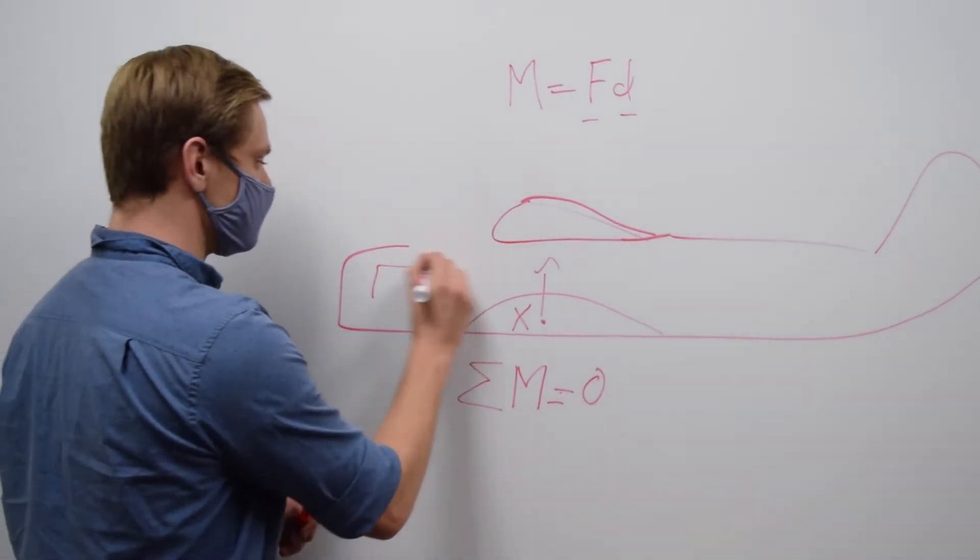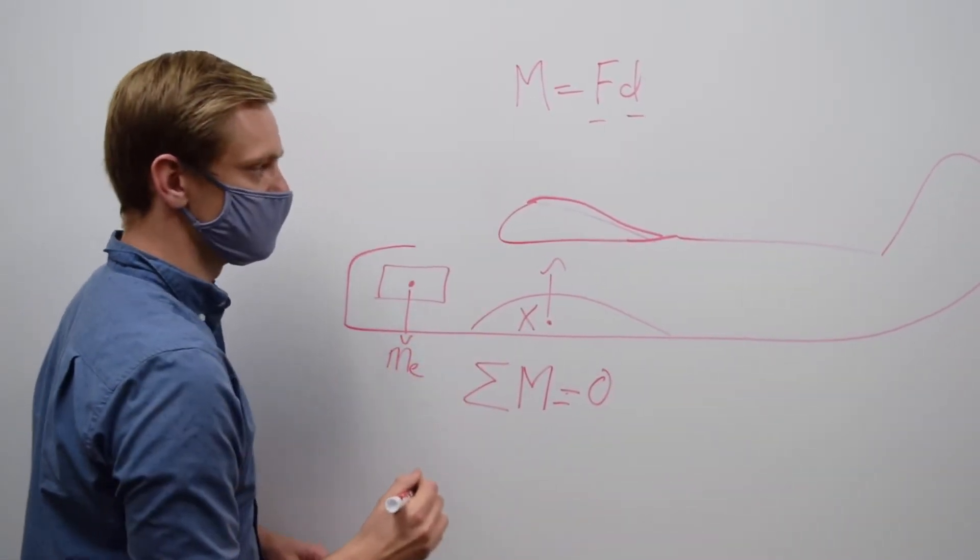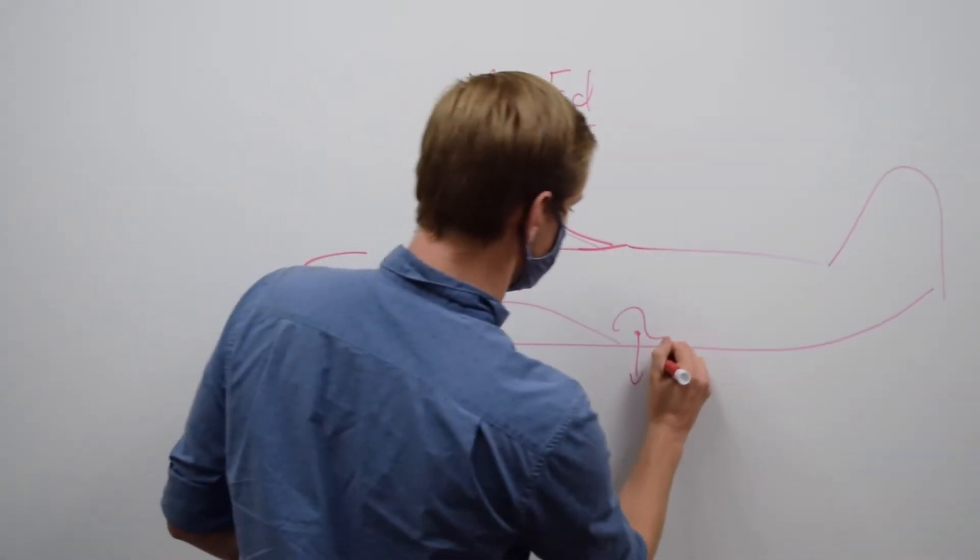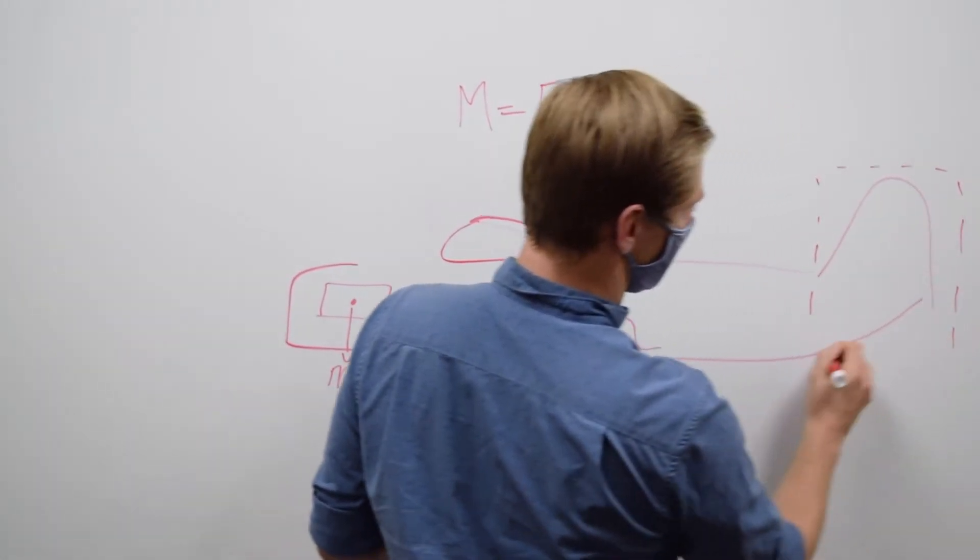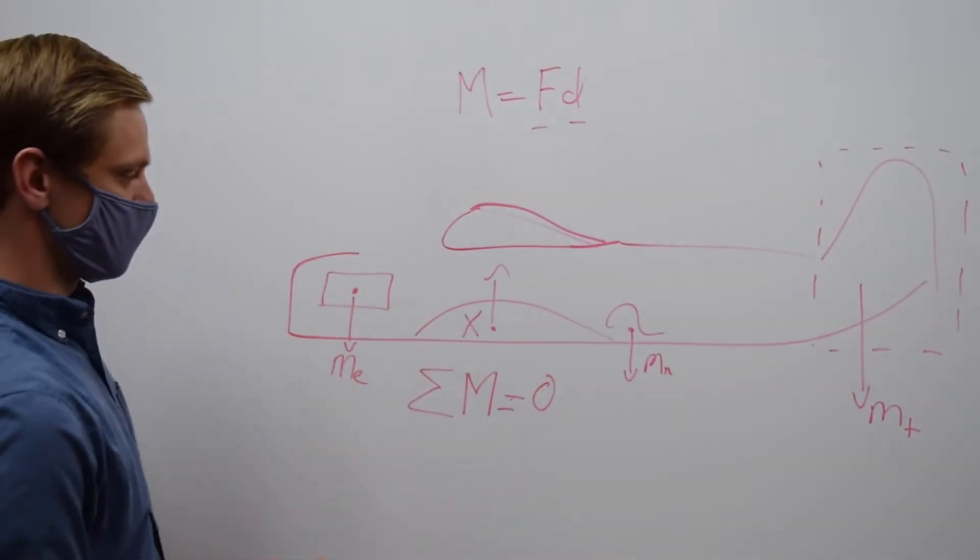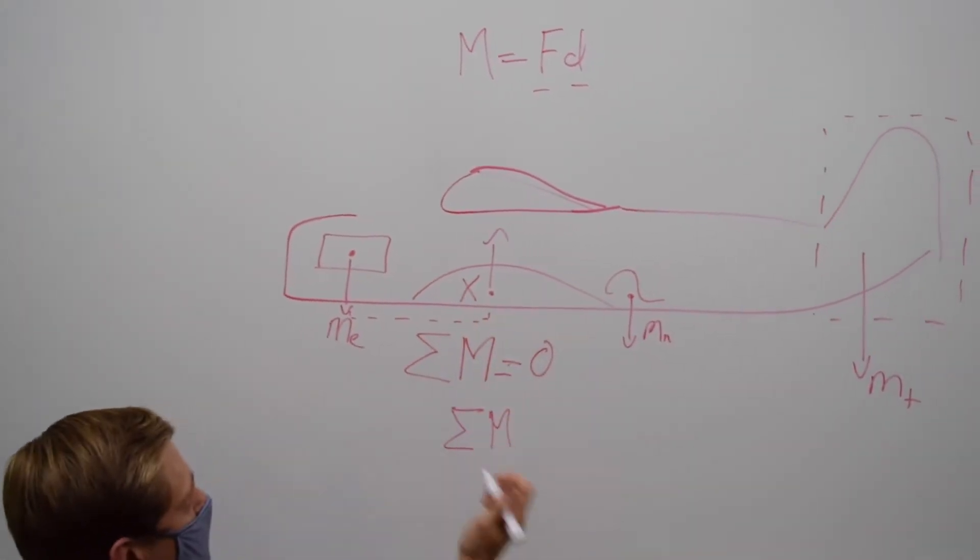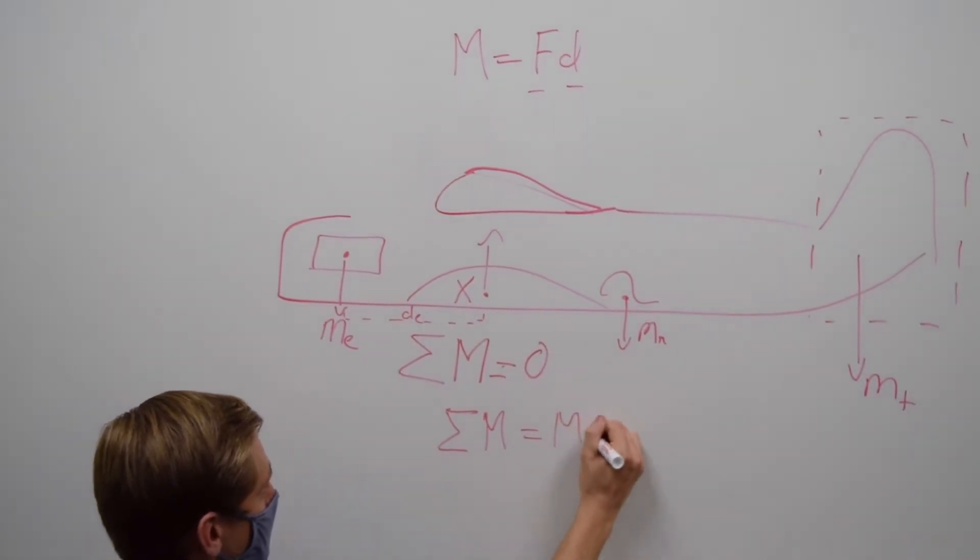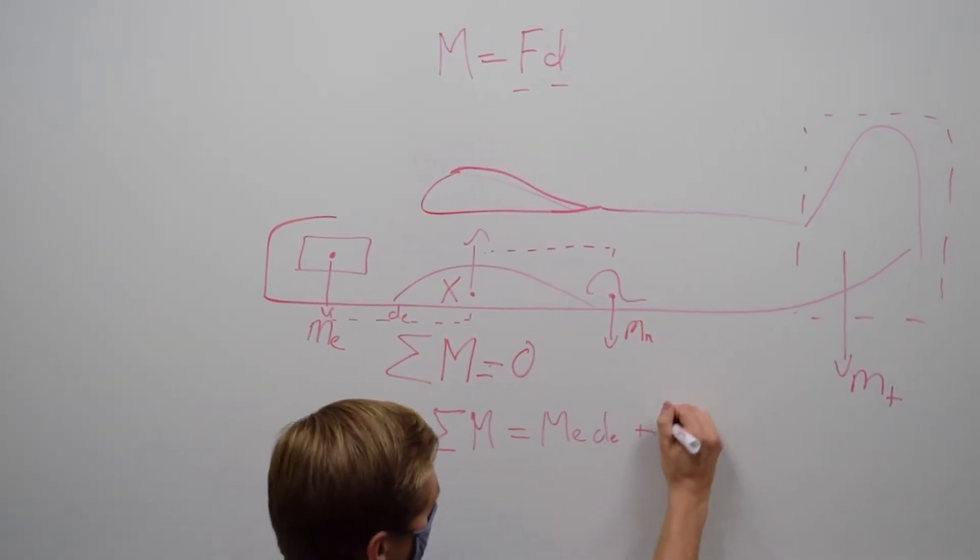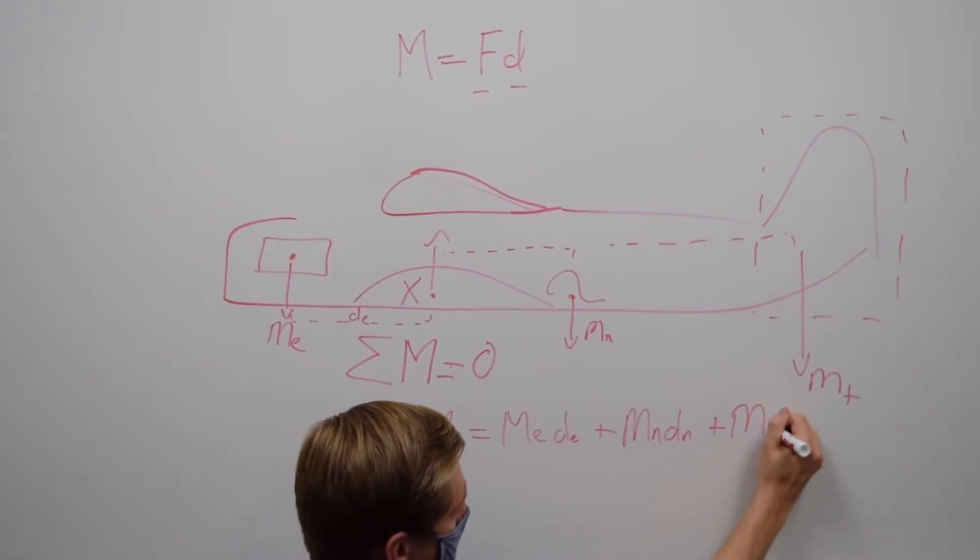Your goal is for the sum of the moments to equal zero. Say you have an engine here. The center of mass of the engine is this. We'll say this is M_E, mass of the engine. Then you have a hydraulic pump here. This is the mass of the hydraulic pump, M_H. Then you have this whole empennage right here. This all has its own weight. We'll say this is mass of the tail.